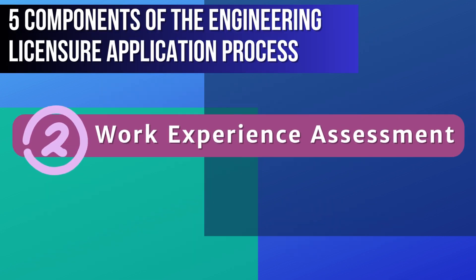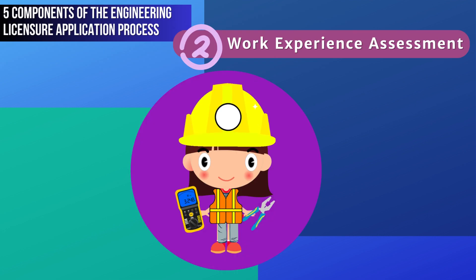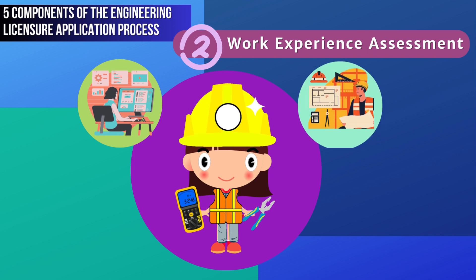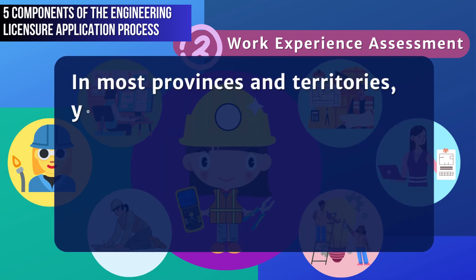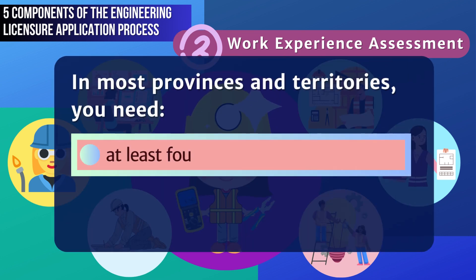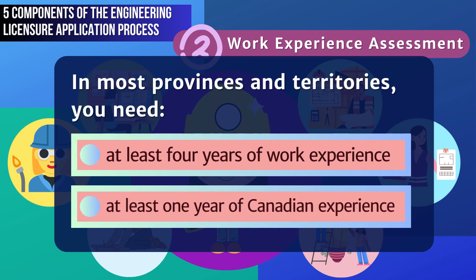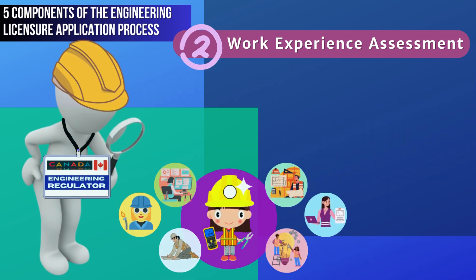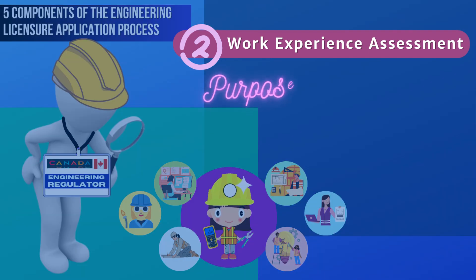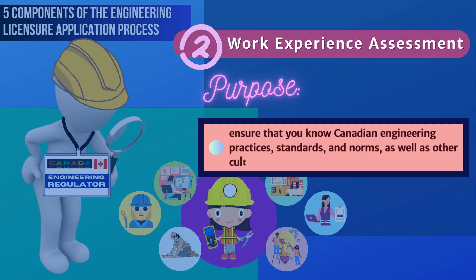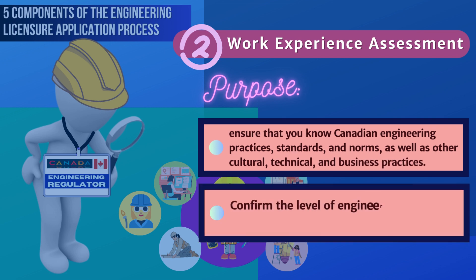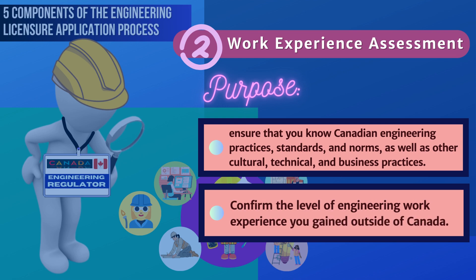Two, work experience assessment. Besides proving that you meet the necessary academic requirements for licensure, you should also show that you have applied your engineering education in relevant work for a certain amount of time. In most provinces and territories, you need at least four years of work experience. While you can earn most of the required engineering experience outside Canada, you must have at least one year of Canadian work experience. The engineering regulator will assess your work experience to ensure you know the Canadian engineering practices, standards and norms, as well as other cultural, technical, and business practices, and confirm the level of engineering work experience you gained outside of Canada.